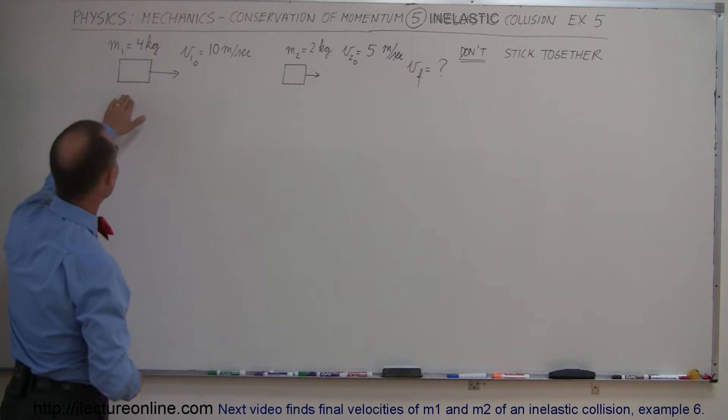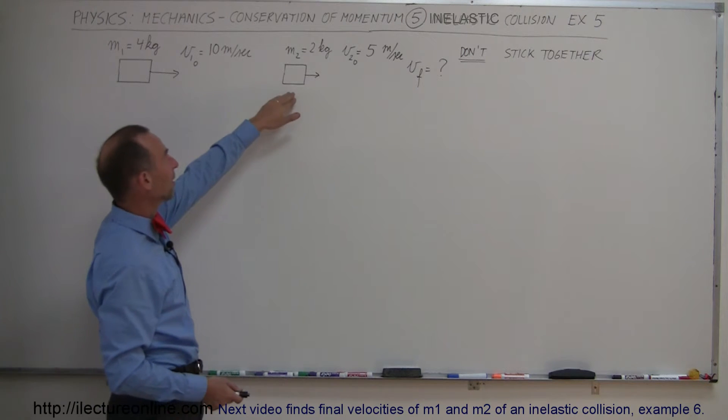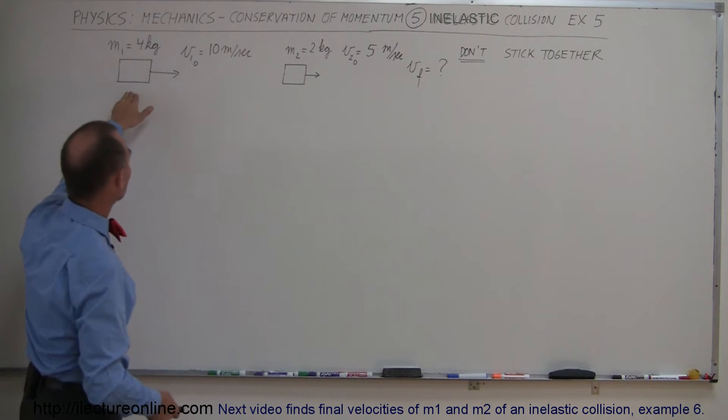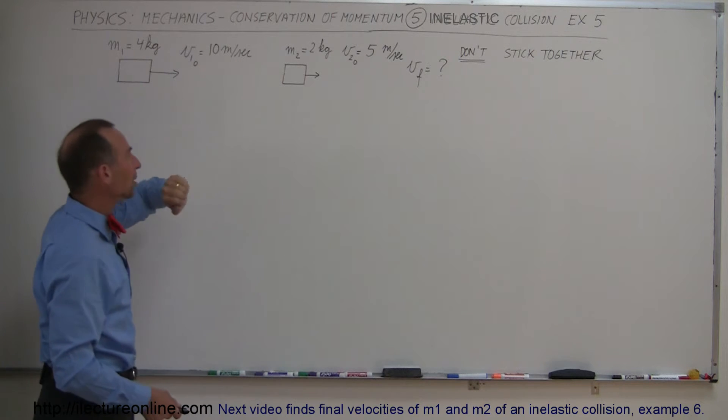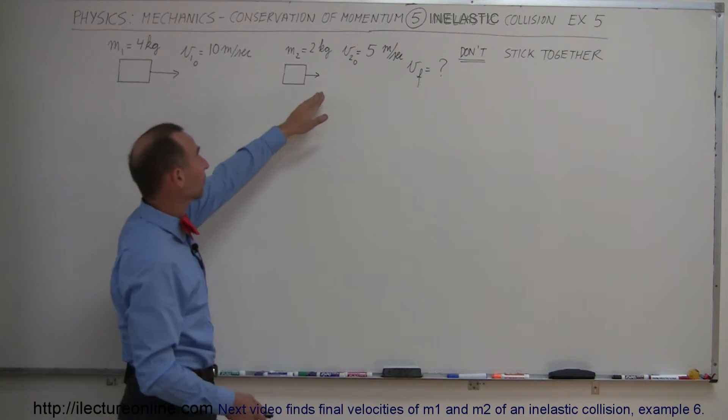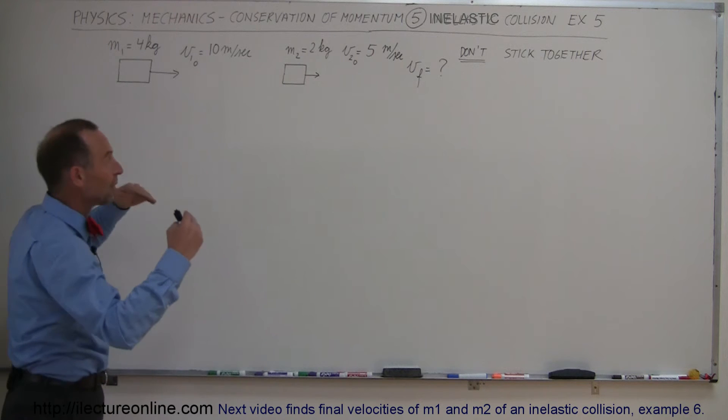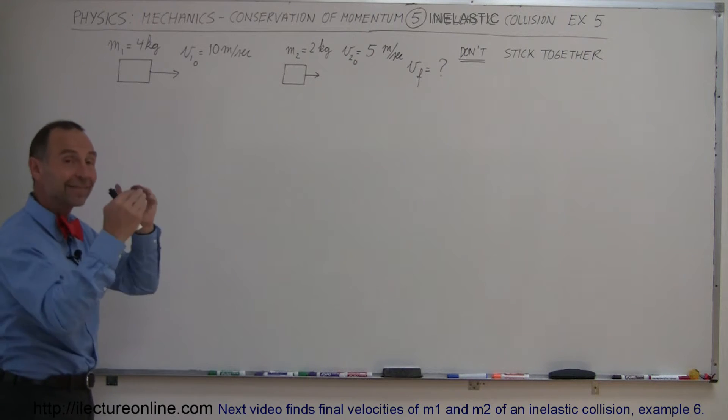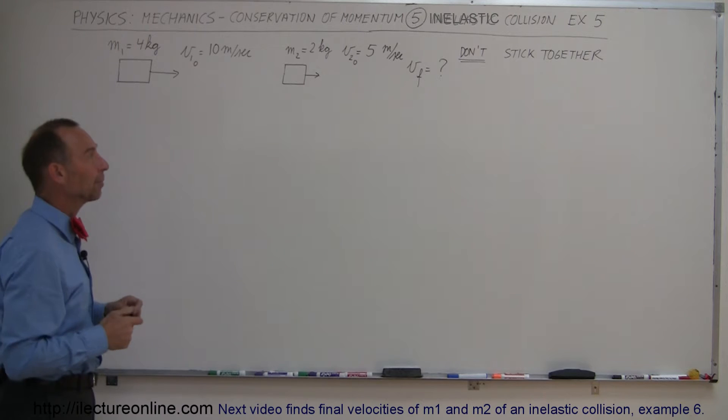Now see what happens next. We have two objects. One has a mass of 4 kilograms, the other one has a mass of 2 kilograms. The 4 kilogram mass has an initial velocity of 10 meters per second. The second mass only 5 meters per second, so the large mass will catch up to the small mass. They will collide but not stick together.